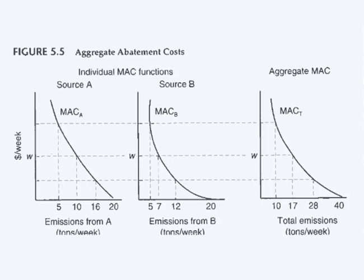In this example, we only have two individual sources, Source A and Source B. You can see they have different shaped marginal abatement cost curves. This is because every source is unique. There are unique circumstances, and all these different circumstances determine the shape of the marginal abatement cost function.